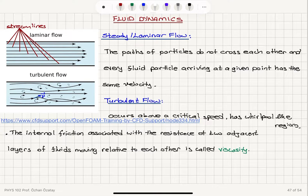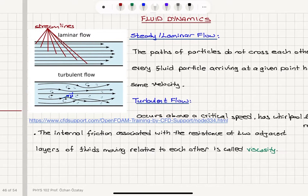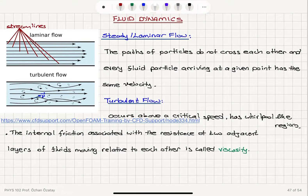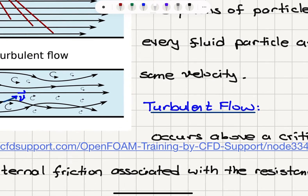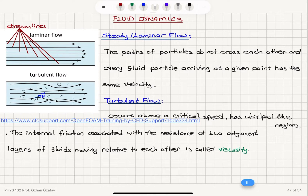In turbulent flow, where the particle paths cross, this occurs above a critical speed and has whirlpool-like regions. You can see these whirlpool-like regions in the turbulent flow.